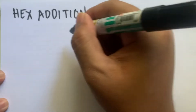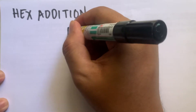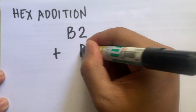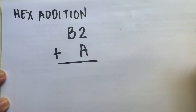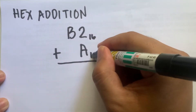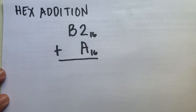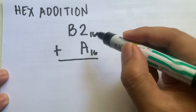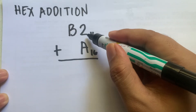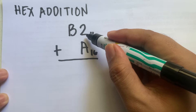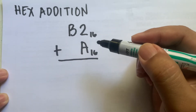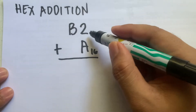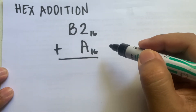For hexadecimal addition, say you are given the number B2 plus A, in base 16. The hexadecimal number system comprises the 10 symbols of the decimal number system, 0 to 9, and the letters A, B, C, D, E, and F. So how do we add these hexadecimal numbers given B2 plus A?